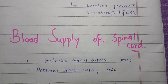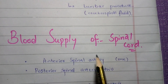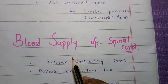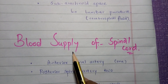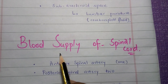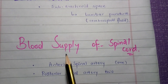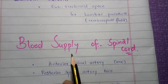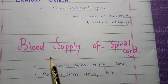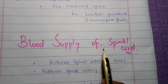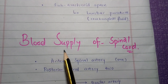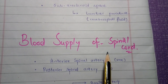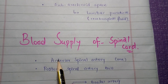Assalamu alaikum students. In this video I am going to highlight the blood supply of the spinal cord, after covering the basic gross features of the spinal cord in the previous videos. Links to those videos are in the description. Today's topic is the blood supply of the spinal cord, which includes both the arterial supply and the venous drainage of the spinal cord.